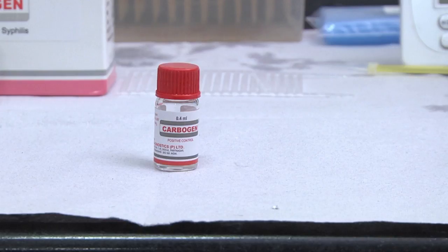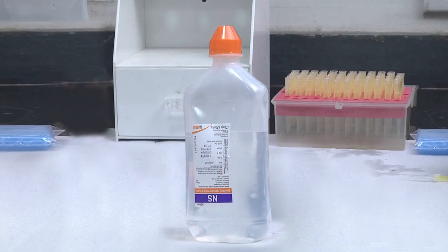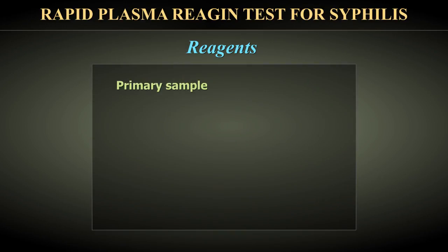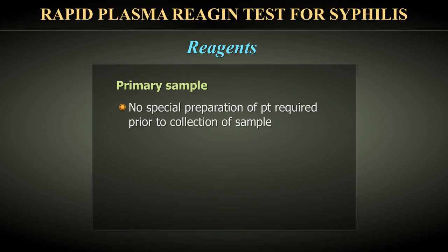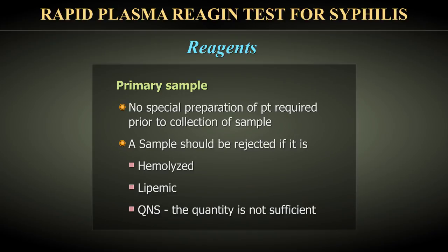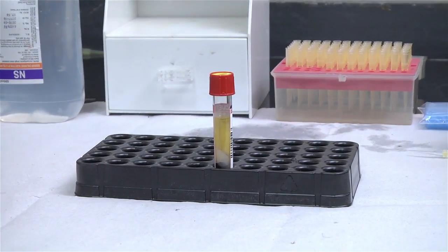Reagents include a positive control, negative control, and isotonic saline. No special preparation of the patient is required prior to sample collection. A sample should be rejected if it is hemolyzed, lipemic, or the quantity is not sufficient. Fresh serum or plasma should be used.